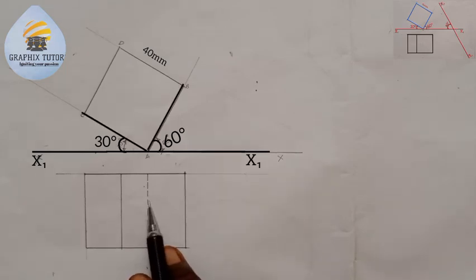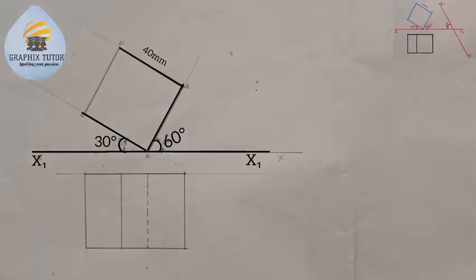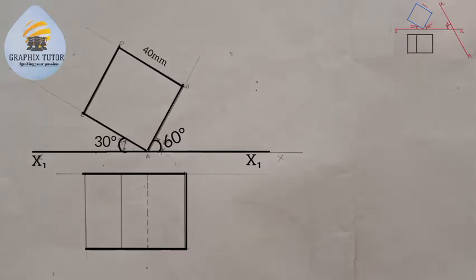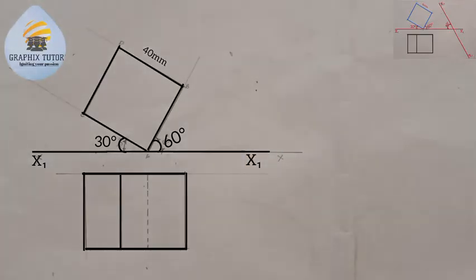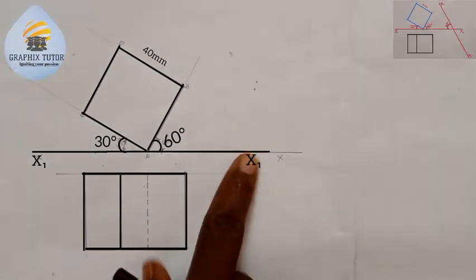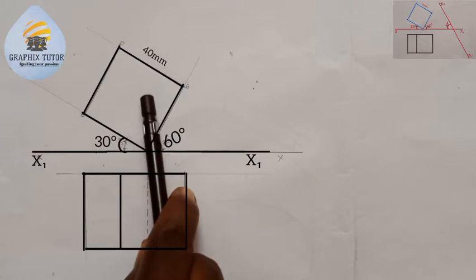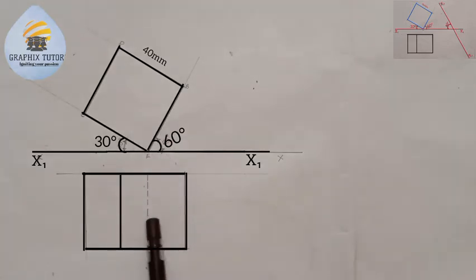This is what we have at the top right corner of the screen. We are told to draw the auxiliary elevation. The rule is: to produce an auxiliary elevation, you project from the plan; to produce an auxiliary plan, you project from the elevation. This is the plan, and this is the elevation.